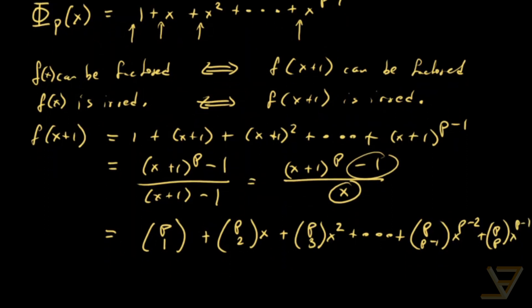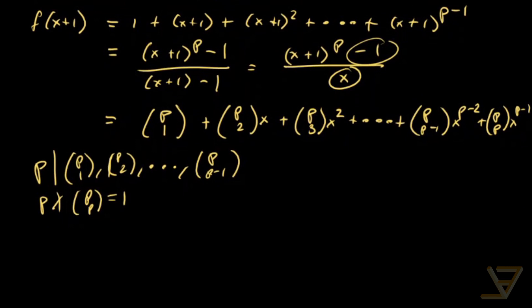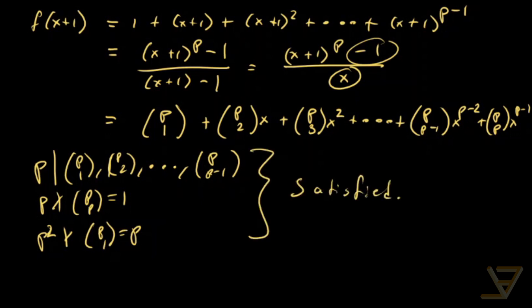And now we're going to use the fact that p divides (p choose 1), (p choose 2), all the way through to (p choose p-1). p does not divide (p choose p), which equals 1. And p squared does not divide (p choose 1), which equals p. So Eisenstein is satisfied, and that proves that the cyclotomic polynomial for the prime p is irreducible.